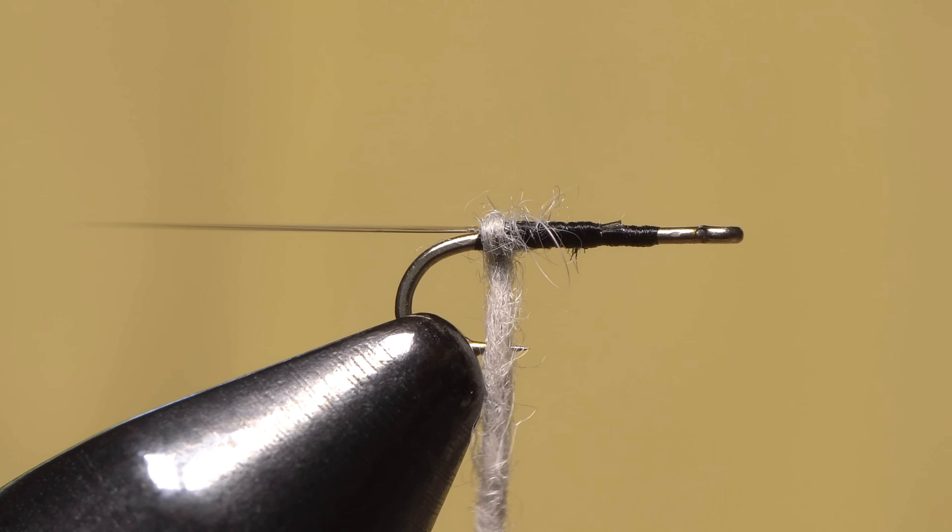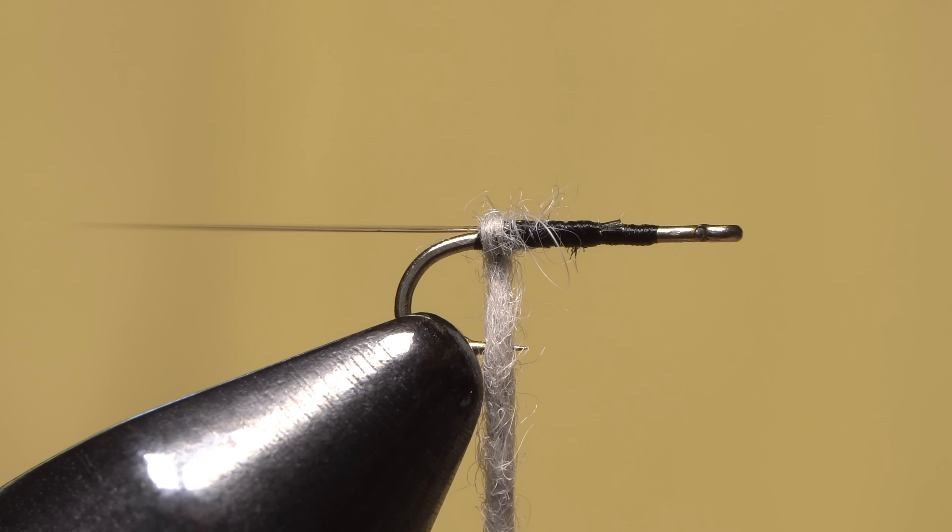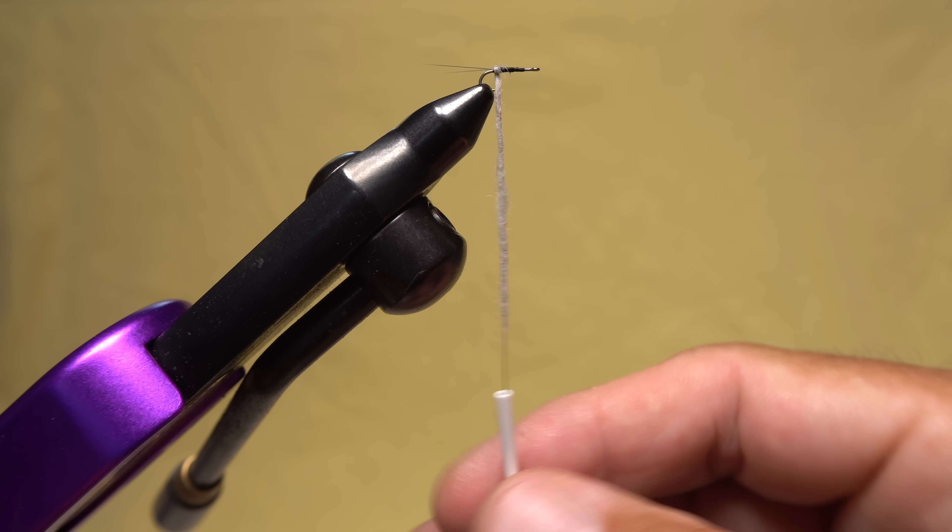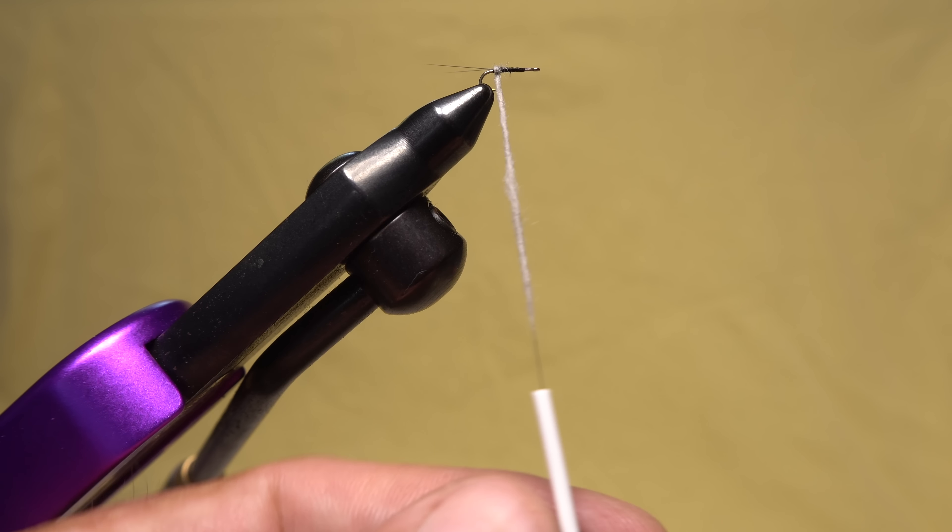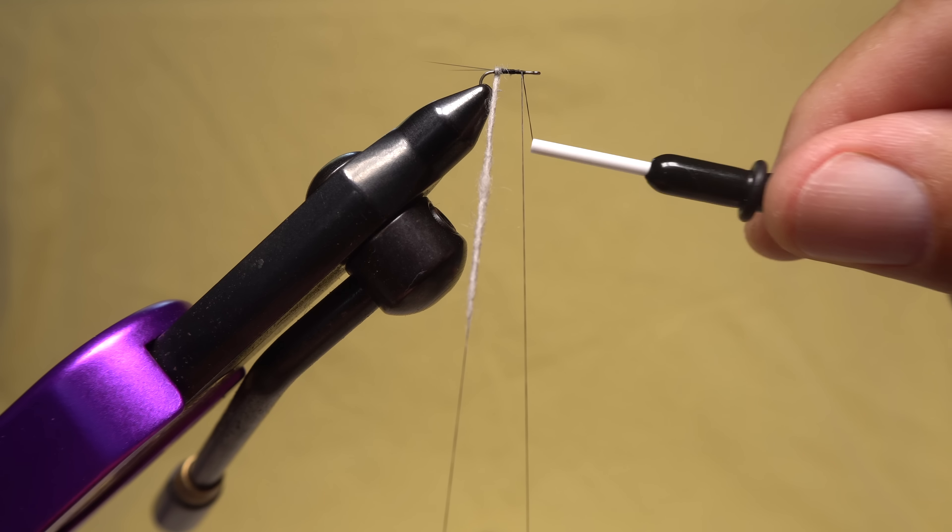Begin taking wraps with the noodle rearward so the dubbing starts right at the base of the tail. Make sure to get a full wrap of dubbing around the hook shank. Give your bobbin a good clockwise spin, which should tighten the dubbing on your tying thread just a bit.